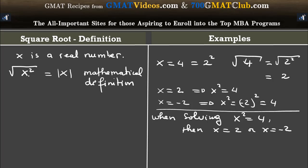There is a relationship between the square root of a number and its absolute value. The absolute value is just to make sure that the number is positive. Because of this definition, the square root of 0 is equal to 0, since the absolute value of 0 is 0, and 0 squared is the same as 0.